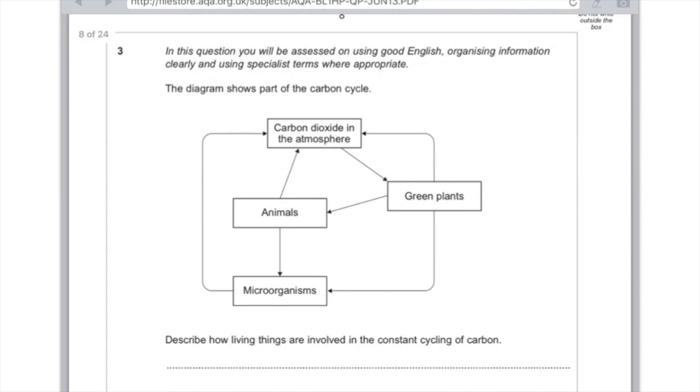As I just said in the video, start with carbon dioxide in the air and say as your first point that plants photosynthesize and they take in carbon dioxide in order to do that. Then describe that plants use carbon to make anything from carbohydrates to proteins to fats.